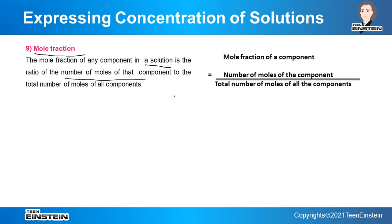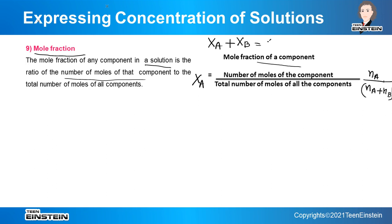Suppose there are two components A and B with nA and nB moles respectively. The total moles will be nA + nB. The mole fraction of A is xA = nA / (nA + nB), and mole fraction of B is xB = nB / (nA + nB). If there are only two components, xA + xB always equals 1, so once you calculate xA you can get xB = 1 − xA.